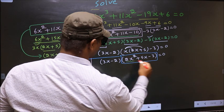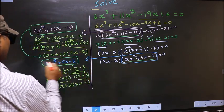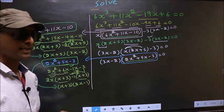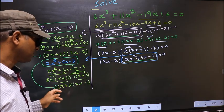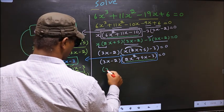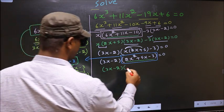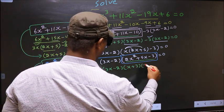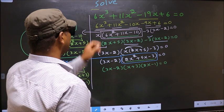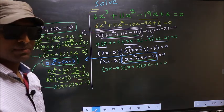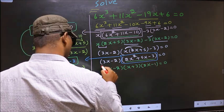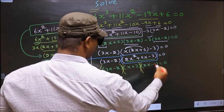In place of this quadratic, we write this factored form. So this equation changes to 3x minus 2 times 2x plus 3 times 2x minus 1 equal to 0. They told us to solve, which means we should get the values of x. Over here we got a product of brackets equal to 0.